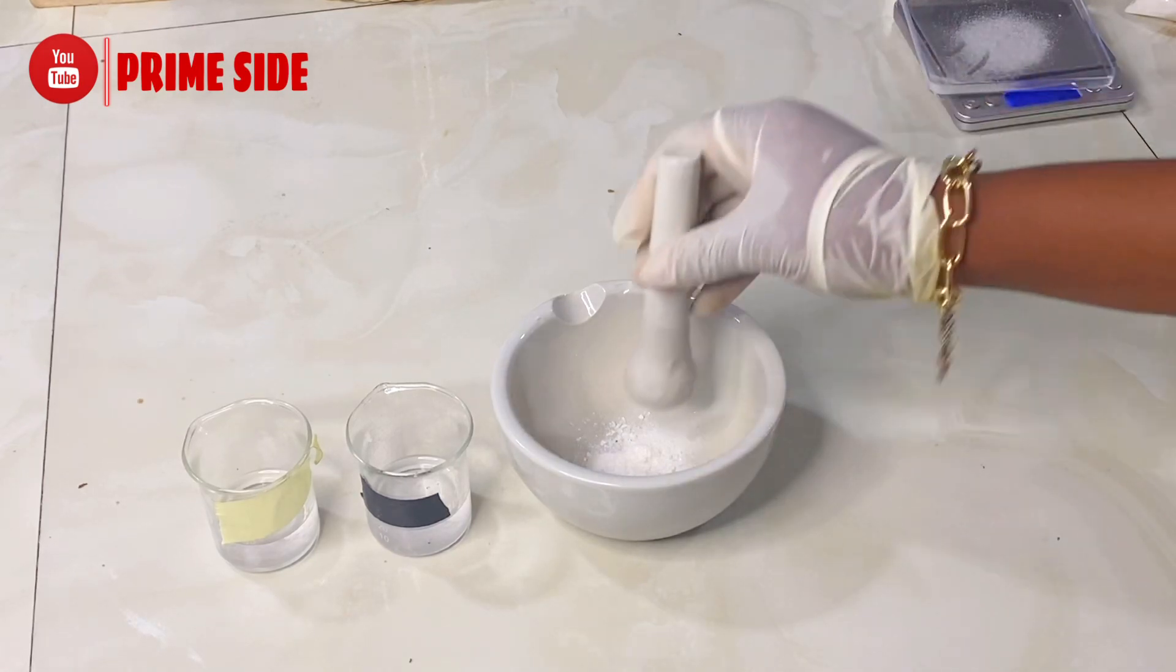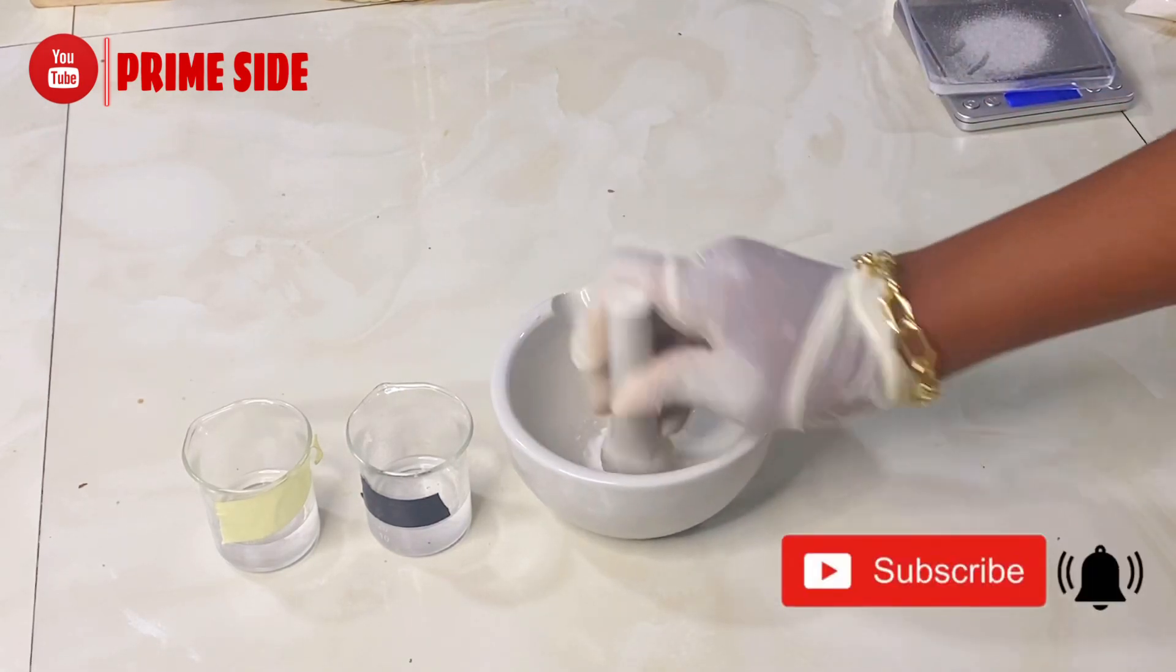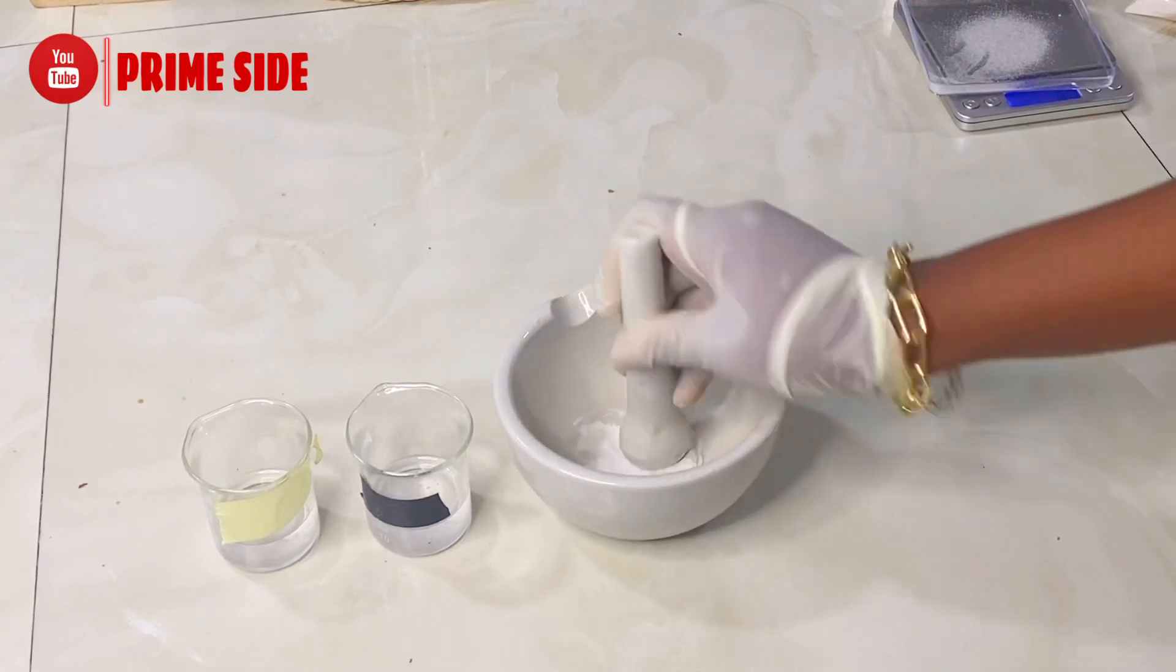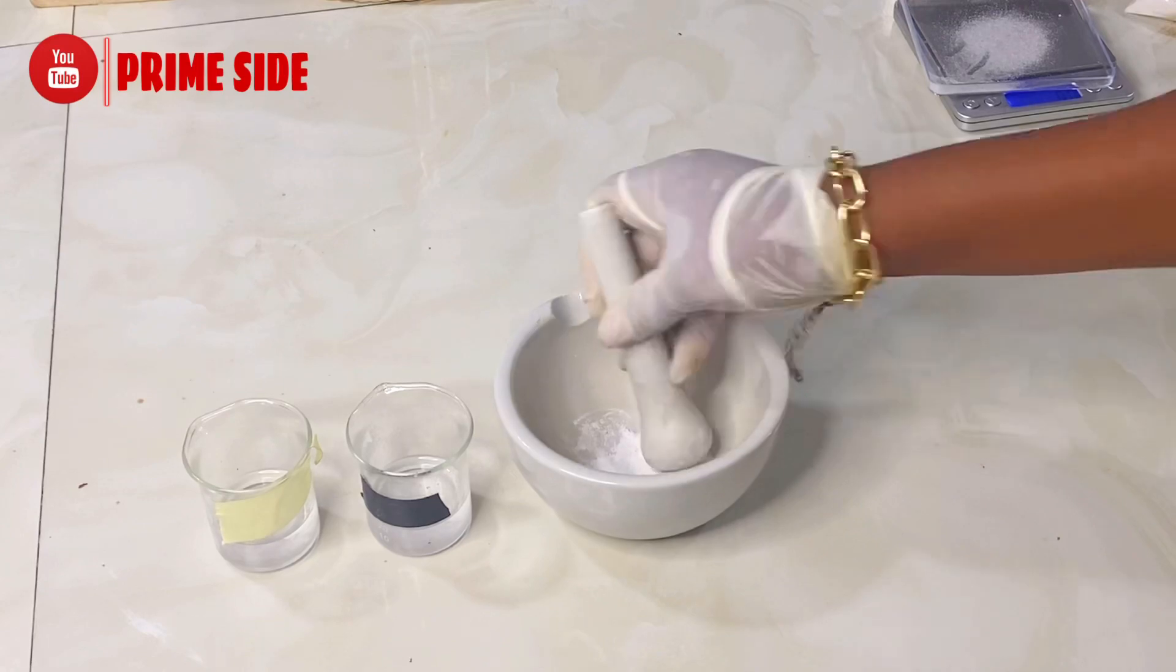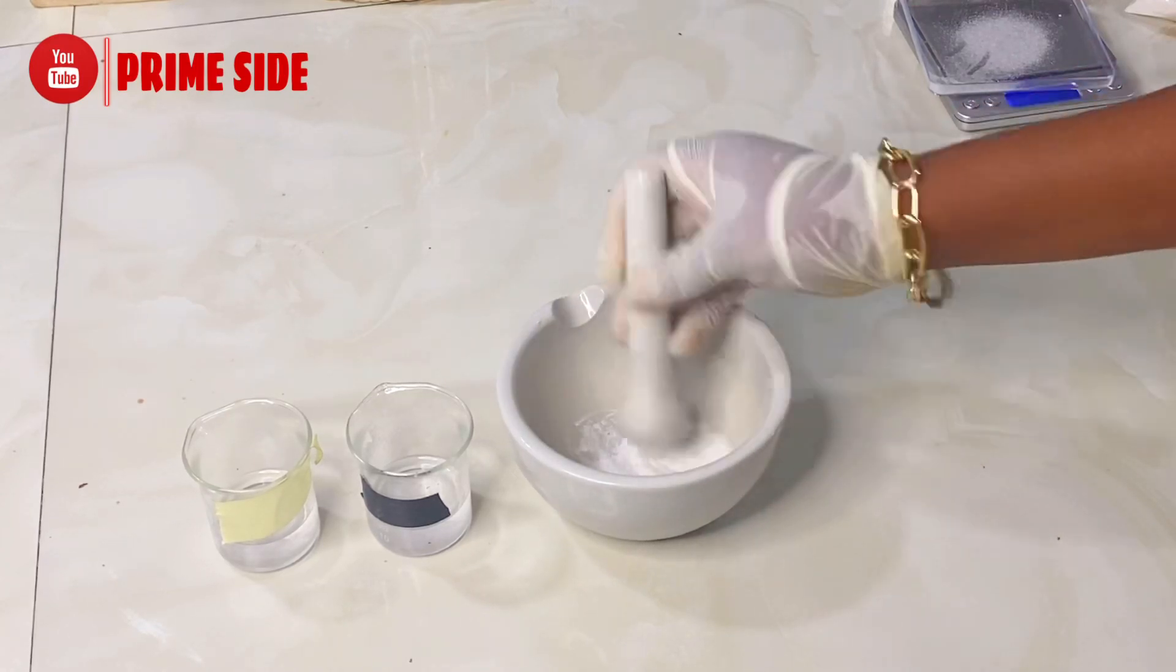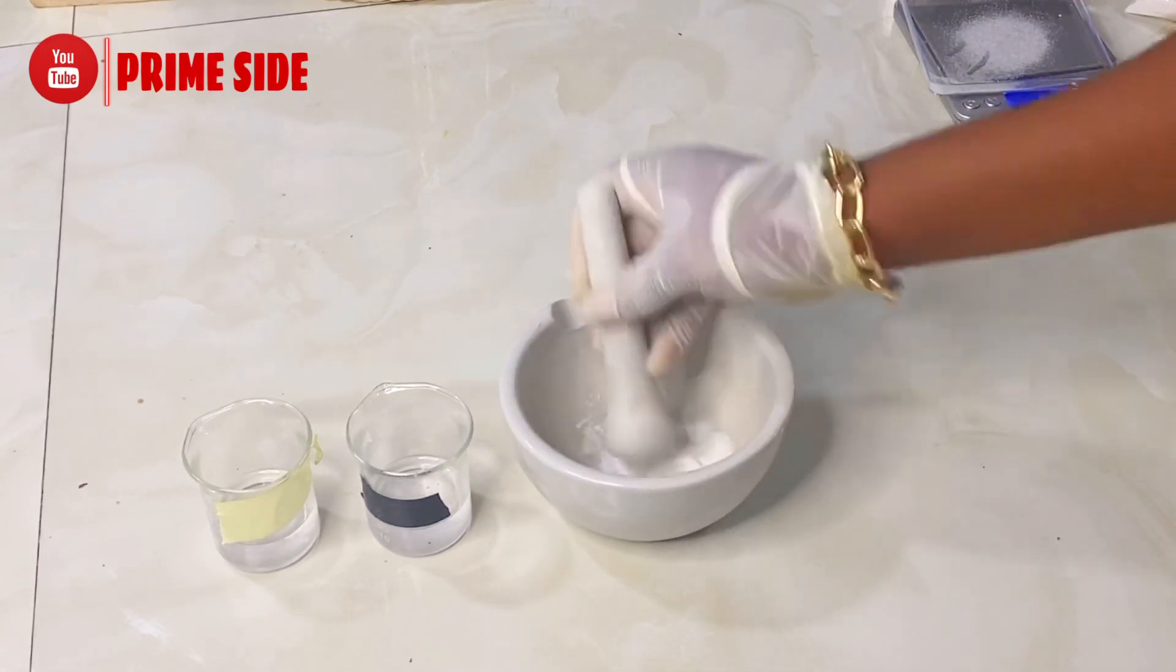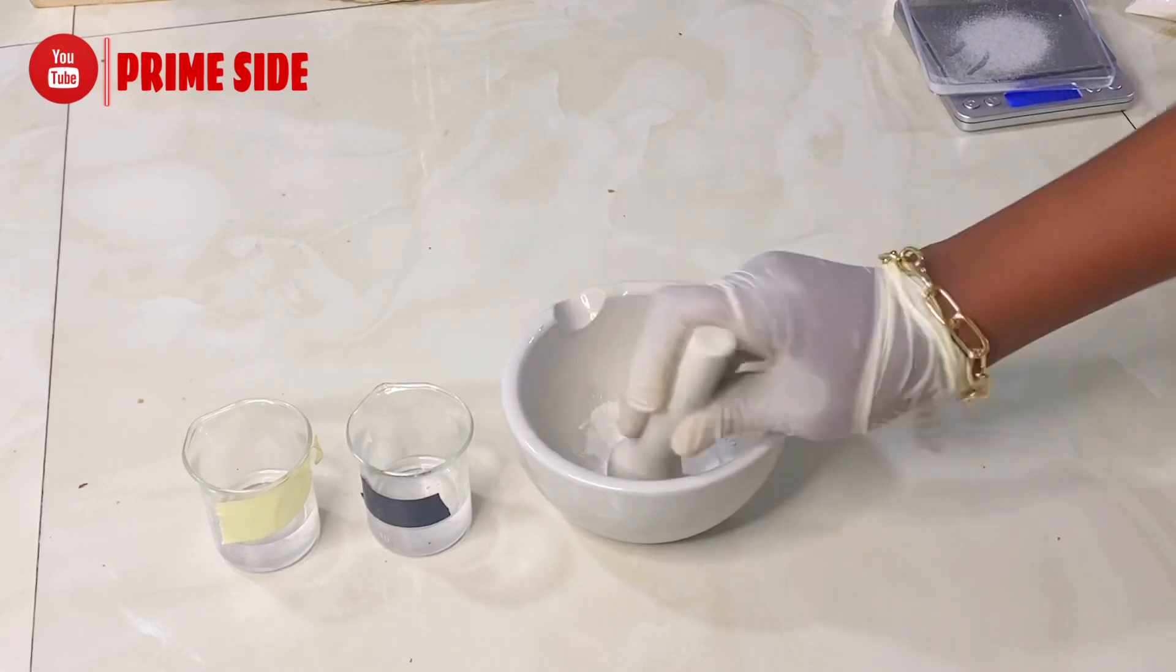Remember that salicylic acid comes in crystals, so I'm going to crush it till it becomes a fine powder. When doing this, ensure that you are with your gloves on and with your mask on, because as you grind the crystals you would inhale the smell and it may not be good for you. So make sure that you are masked up.